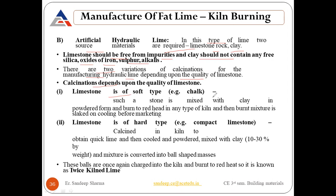If the limestone is soft — for example, chalk — such stone is mixed with clay in powder form and burned to red heat in any type of kiln, and then the burnt mixture is slaked on cooling before marketing. On the other hand, for hard limestone such as compact limestone, it is calcined in the kiln to obtain quicklime, then cooled, powdered, and mixed with clay at 10 to 30 percent by weight, and the mixture is converted into ball-shaped masses.